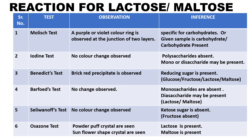For reducing disaccharides — when the sample is unknown, or when you know it is lactose or maltose — we need to perform all these tests. Starting with Molisch test: as they are carbohydrates, it will give a violet-purple ring at the junction of two layers. We can write in the inference that carbohydrate is present.